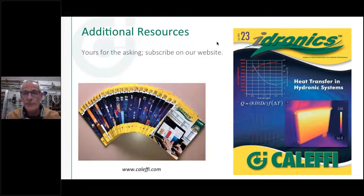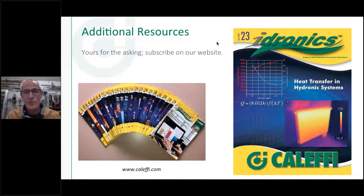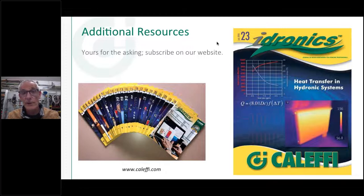A lot of what I'll be talking about tonight comes from Issue 23 of our Hydronics journal, which covers heat transfer in hydronic systems. We mail these out for free twice a year to your home or business, and they're also available as a PDF on our website. We try to keep it generic — you'll even see competitors' products in there. Back issues are also available. If there's a topic you think we should cover, let us know. The next one will be on air-to-water heat pumps.